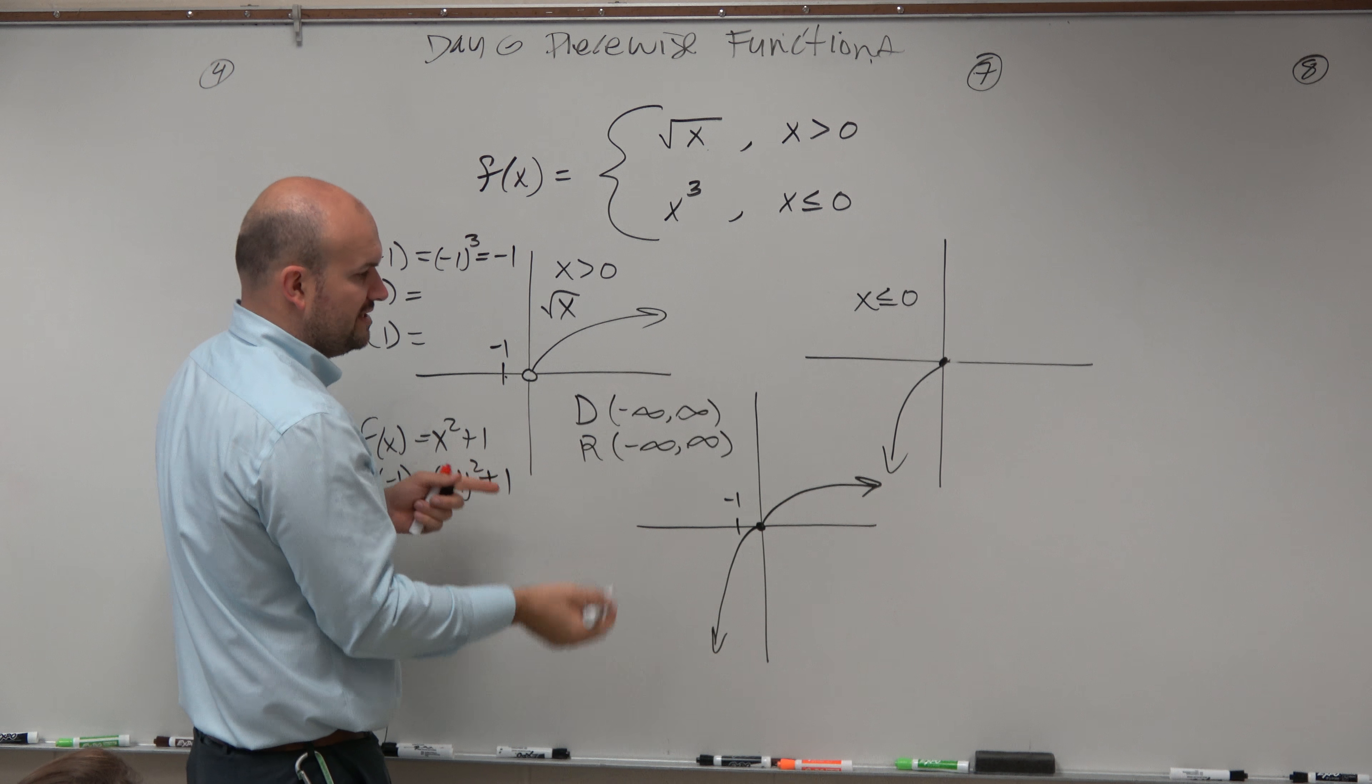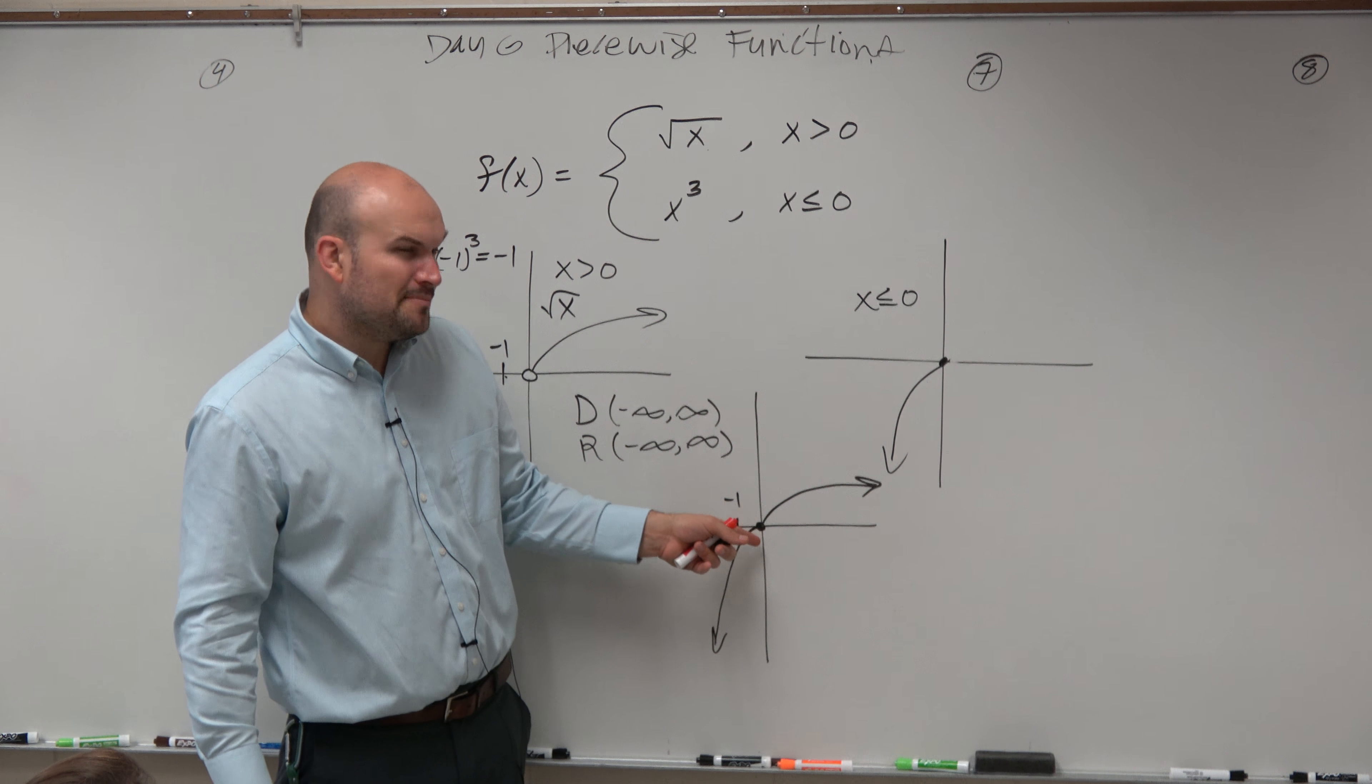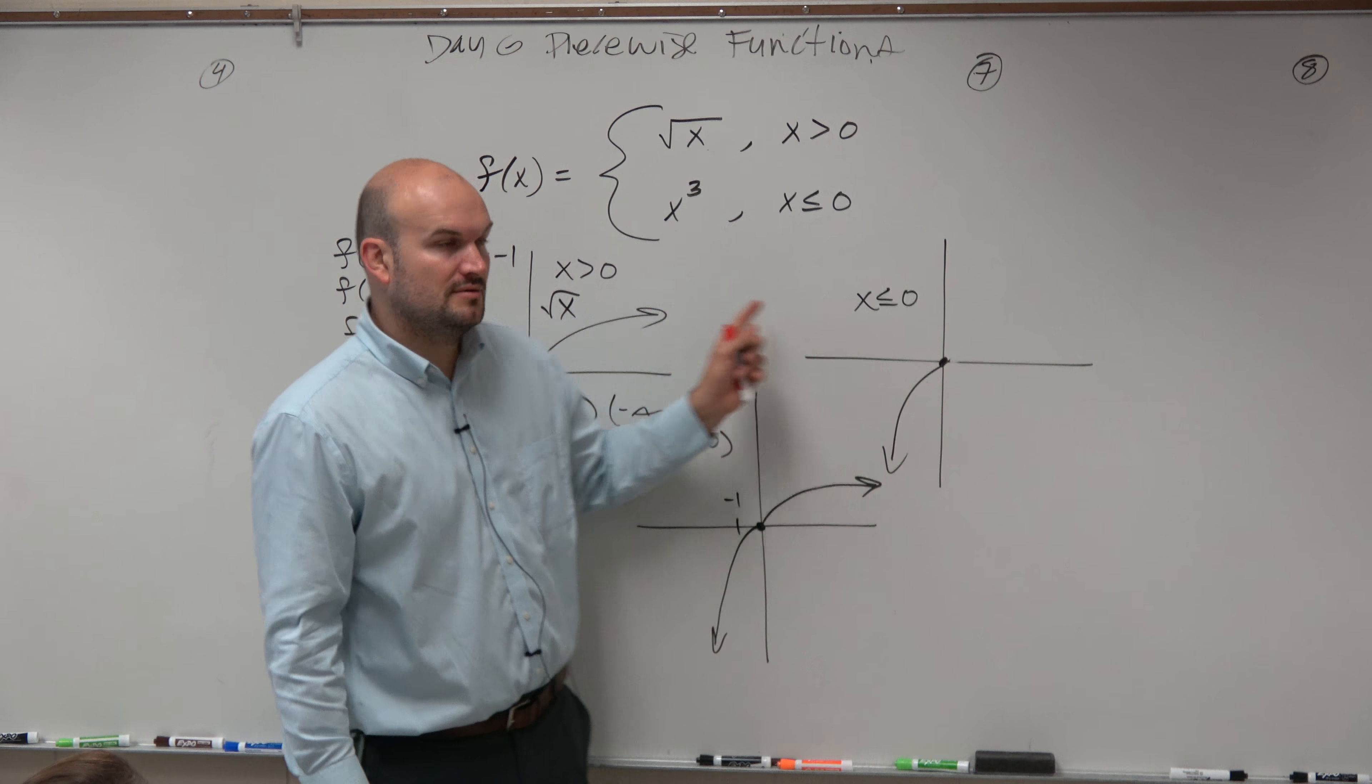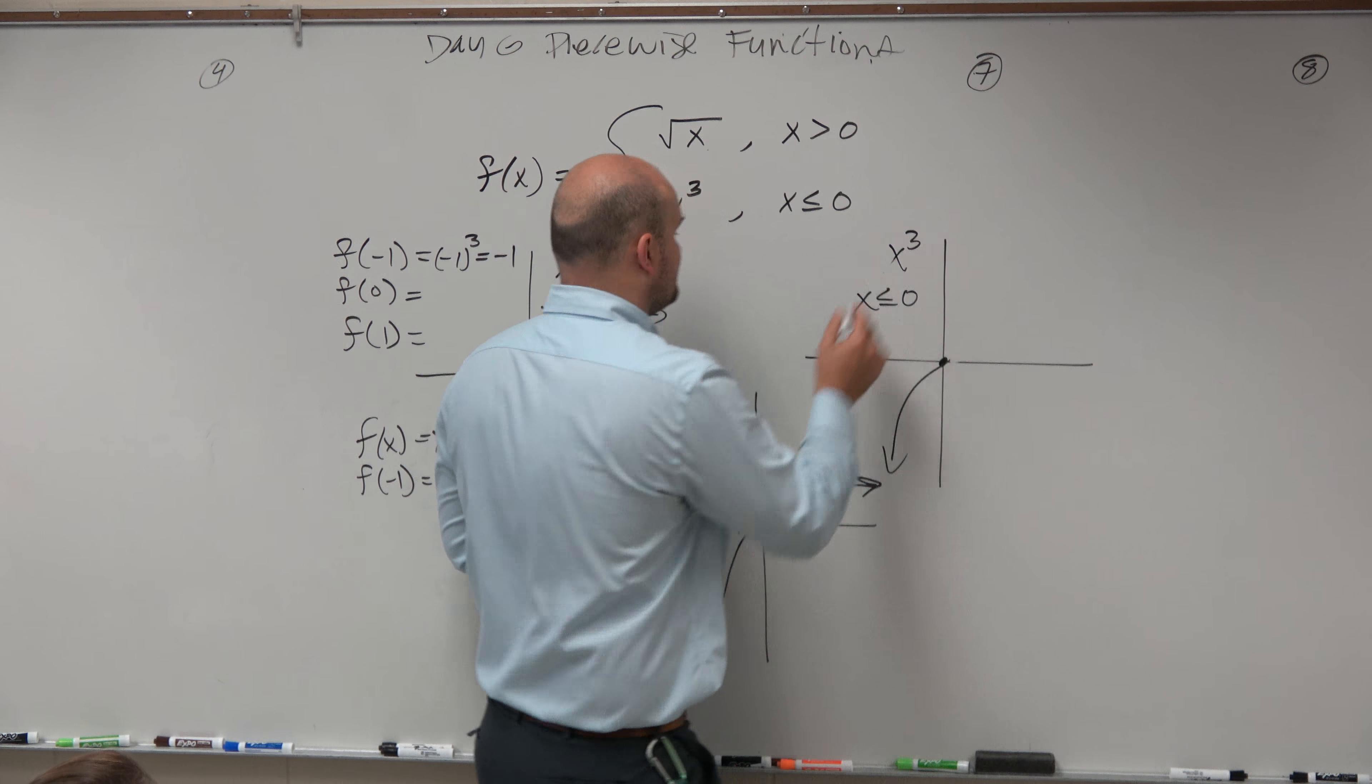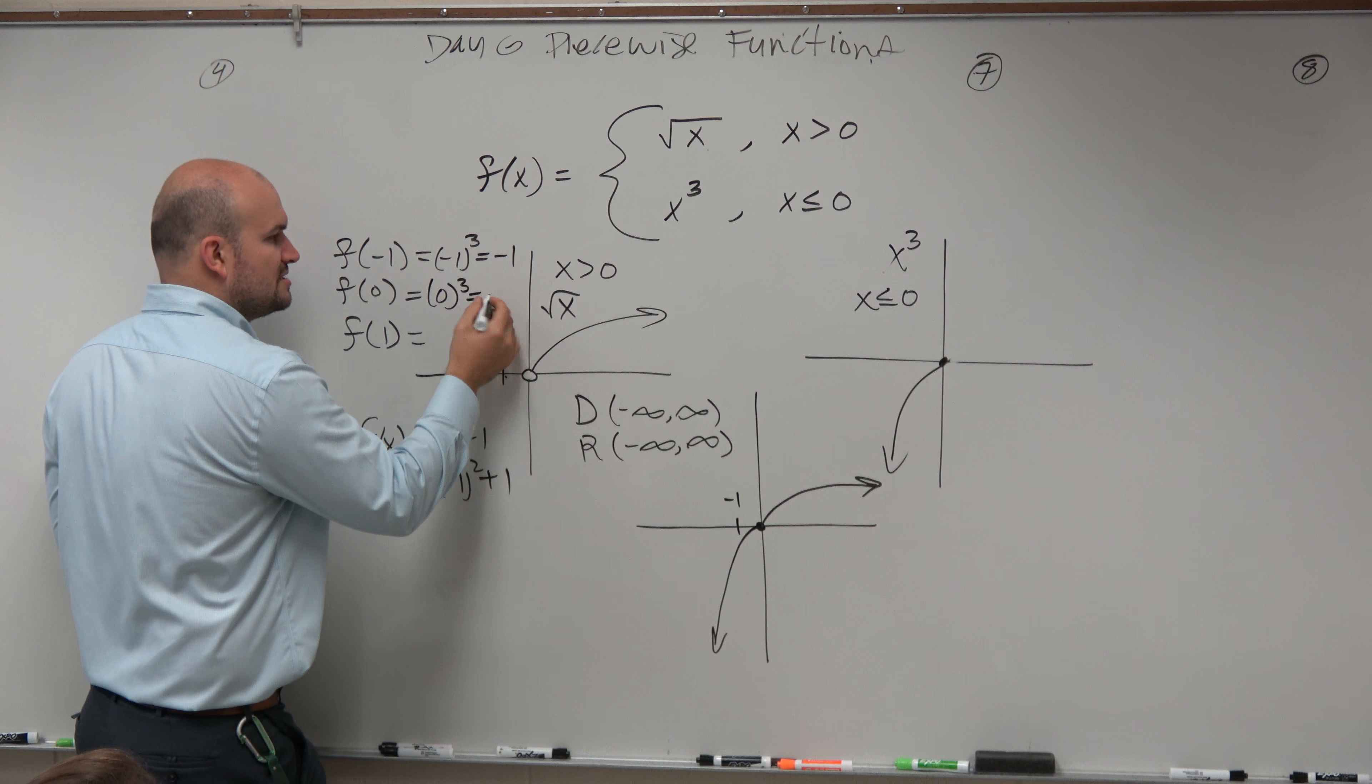f of 0. Again, we look at this. Which function is defined at 0? It might not be obvious here, so let's look in these two graphs. Which one is defined for 0? This one, which is the x cubed graph, right? So again, 0 cubed equals 0.